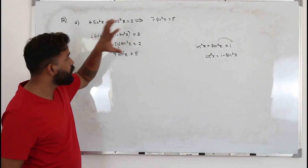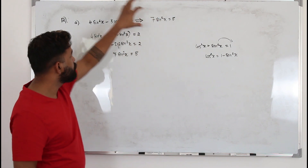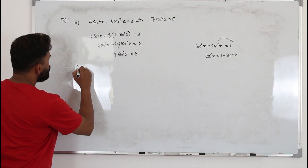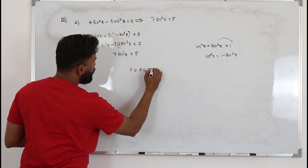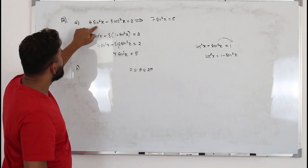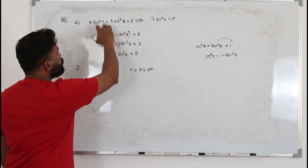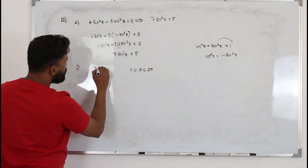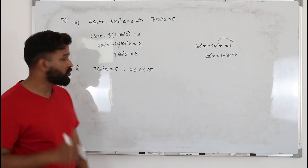In past papers, part A typically involves trigonometric identities to rearrange the equation, and part B asks you to solve the original equation within a given limit — here 0 to 2π. Since the original equation has more than one trig function, we use the result from part A: 7sin²x = 5, which has only a single trig function.